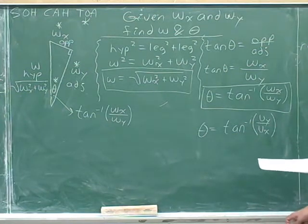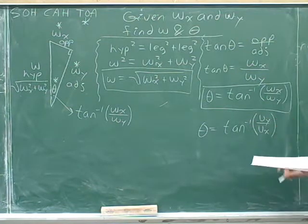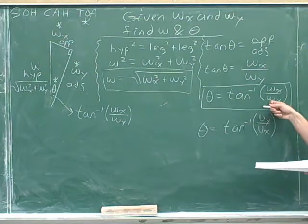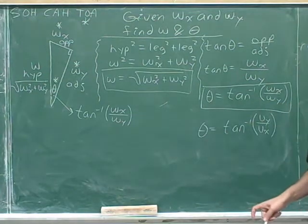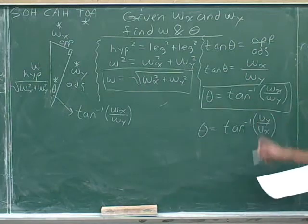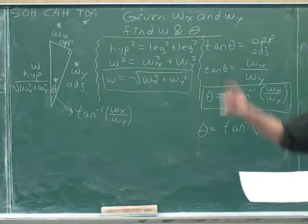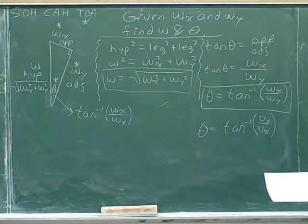I just want to point out that notice that in this problem, in the last problem, the y subscript ended up on the top of the fraction. And in this problem, the y subscript ended up on the bottom of the fraction. So this is just a warning to be awake. You can't just memorize, oh, y always goes on top or y always goes on bottom. You always have to think through the logic of the problem using SOHCAHTOA and labeling the opposite and the adjacent sides.